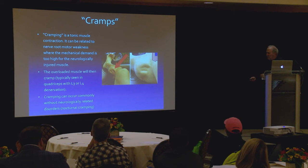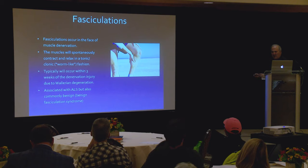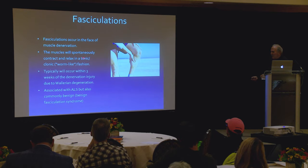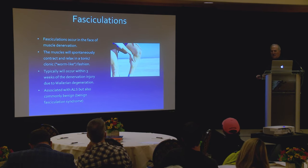Fasciculations occur in the face of muscle denervation. If you have a muscle that's injured, after three weeks with Wallerian degeneration, the muscle cells without nerve conduction are going to fibrillate — you can see that on EMG and on physical exam. The muscles will spontaneously contract and relax in a worm-like fashion within three weeks of the denervation injury. Fasciculations are also associated with ALS, but also with benign fasciculation syndrome. All you're doing is taking the data and asking: is it nerve injury, benign fasciculation syndrome, or ALS? You find what you look for and you see what you know.